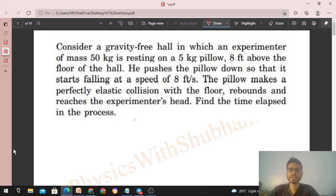Okay, hi everyone. So today let's discuss this interesting problem. It says consider a gravity-free hall in which an experimenter of mass 50 kg is resting on a 5 kg pillow 8 feet above the floor of the hall. He pushes the pillow down so that it starts falling at a speed of 8 feet per second. The pillow makes a perfectly elastic collision with the floor, rebounds and reaches the experimenter's head. Find the time elapsed in this process.